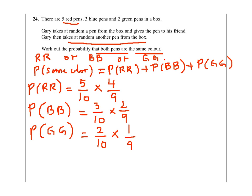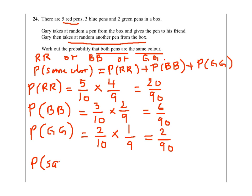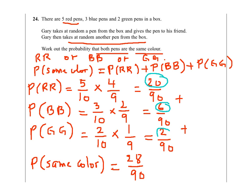So now we add up all these probabilities. Red and red gives 20 over 90, blue and blue gives 6 over 90, and green and green gives 2 over 90. So the probability of the same colour is 20 over 90 plus 6 over 90 plus 2 over 90, which equals 28 over 90. This is approximately 0.31, or 31 percent.